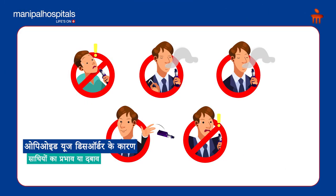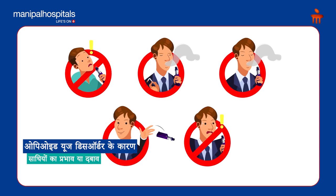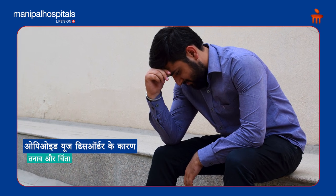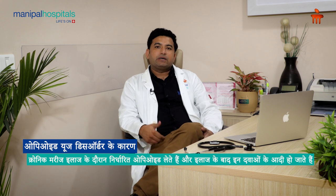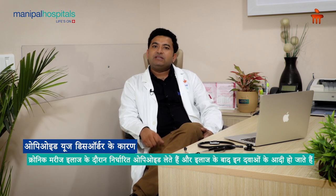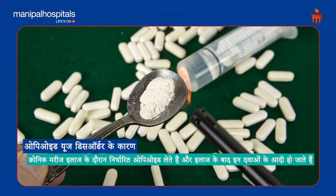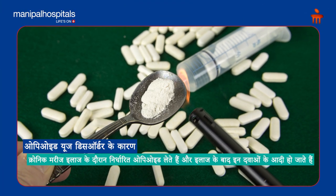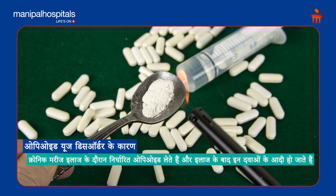Opioid use disorder or any drug addiction has several causes. One is that people have peer pressure — my friends are using it, so I can do it too. Other than that, people have stress and anxiety. They also have medical comorbidities, such as cancer patients or chronic pain symptoms. These patients take opioids in a prescribed dose, but over a period of time they get addicted.